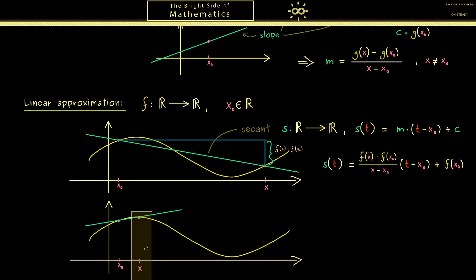And now you might already guess we push it even further such that we have a limit process. Then in this limit we get something out we call the tangent. Still it's a linear function as the secant and often it's simply called y. Indeed now we already know the formula for it.